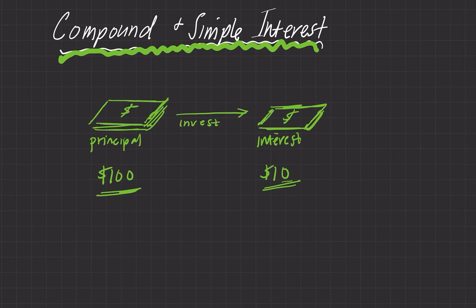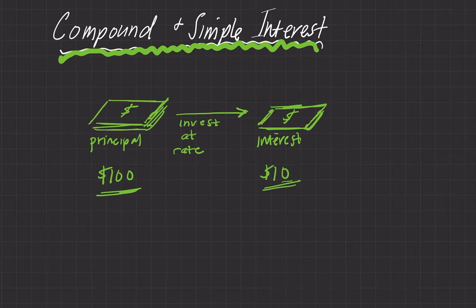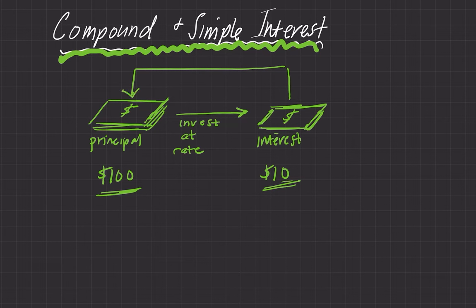Compound interest is that you compound the interest. You take the principal, invest it at some rate, you get the interest, but then you take that interest, put it back on — you compound it back onto the principal — and you repeat the cycle.